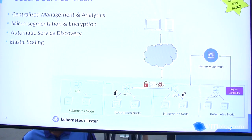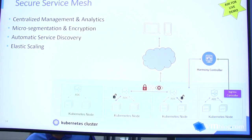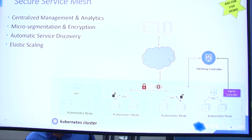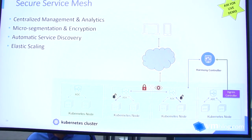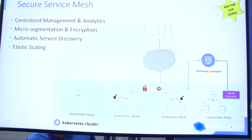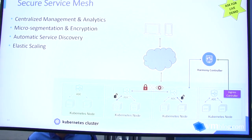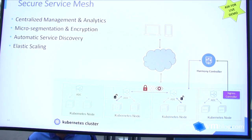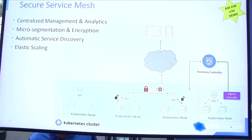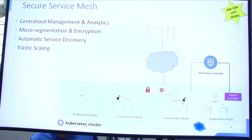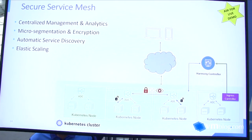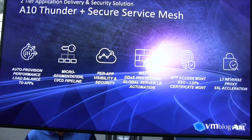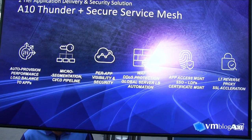In a typical deployment of the secure service mesh, the layer below is the Kubernetes infrastructure with an application running as pods. Lightning ADC is set up as a daemonset running on each node. Harmony Controller is the centralized management and visibility station, and the ingress controller — what we call the A10 Kubernetes Connector — acts as an extension of the Harmony Controller, keeping the configuration up to date with the current state of Kubernetes.